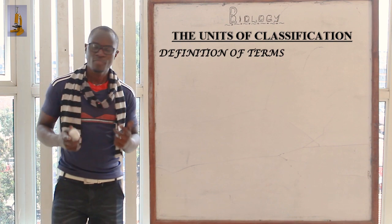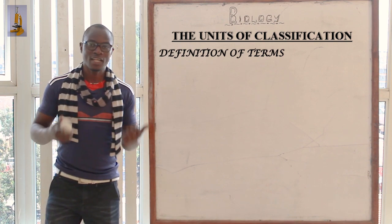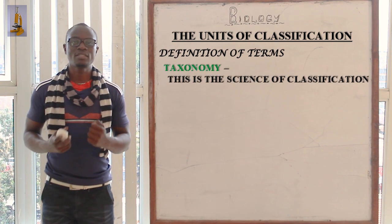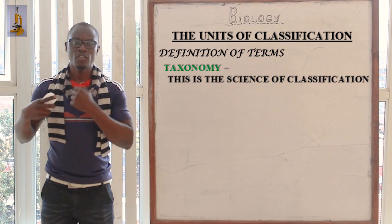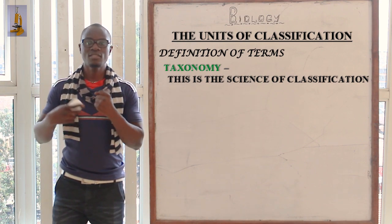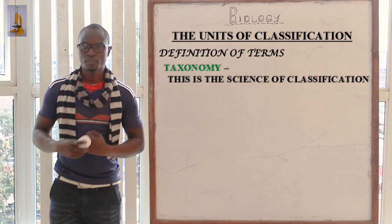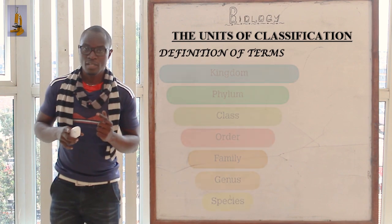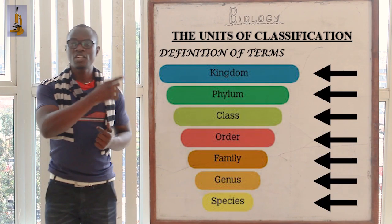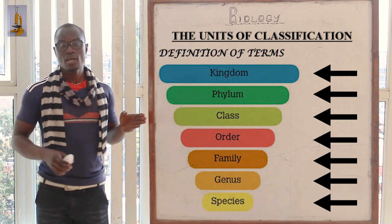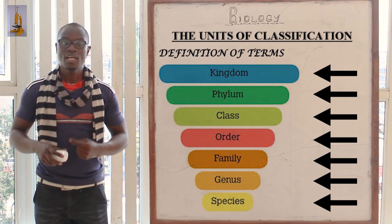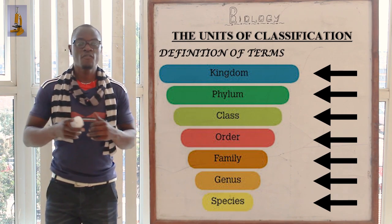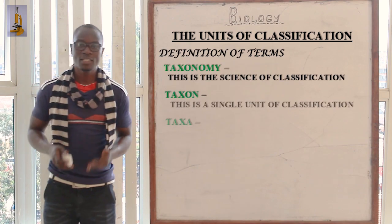Before proceeding on the units of classification, let's define some key terms. The first term is taxonomy. Taxonomy is the science of classification, or the study of classification. We also have the term taxon — a taxon is one specific unit of classification. Many units of classification, or many taxons, are called taxa.